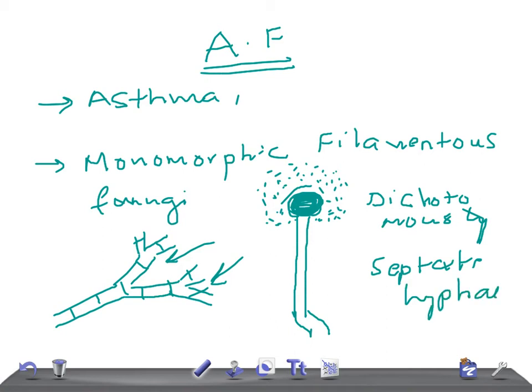Aspergillus fumigatus is a saprotroph, widespread in nature, and is typically found in soil and decaying organic matter such as compost heaps. It plays an important role in carbon and nitrogen recycling.